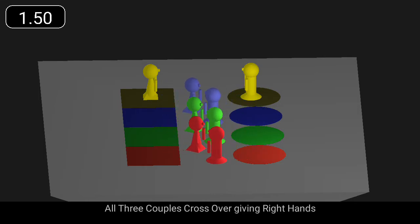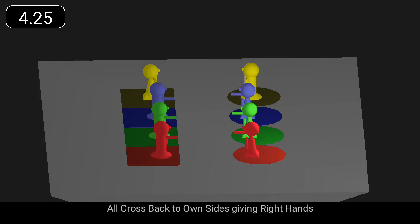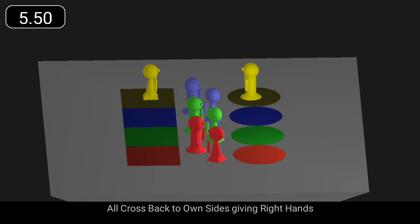All three couples cross over giving right hands. All cross back to own sides giving right hands.